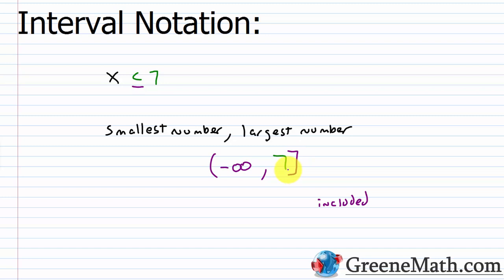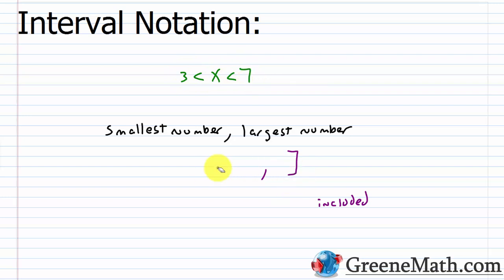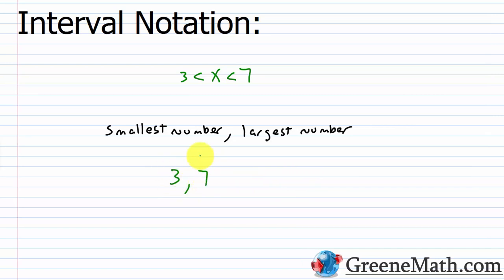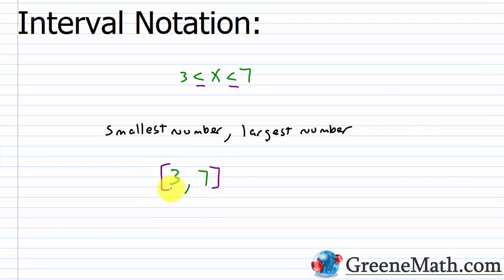The other scenario is a three-part inequality. If x is greater than 3 and less than 7, then 3 and 7 are both not included, but any value in between works. In interval notation, we write (3, 7) with parentheses next to each. If we change to a non-strict inequality, those parentheses would simply change to brackets.